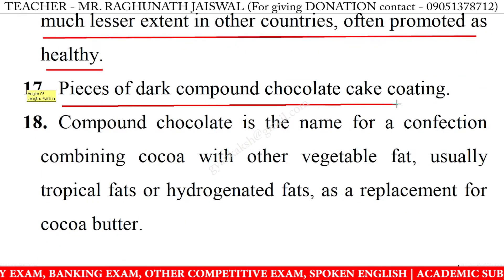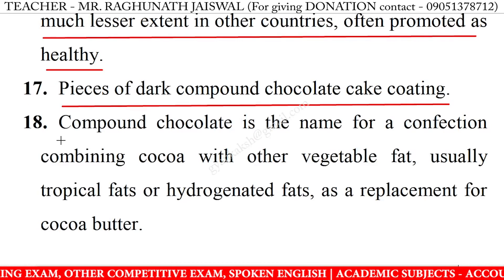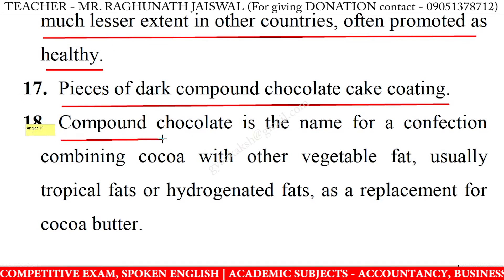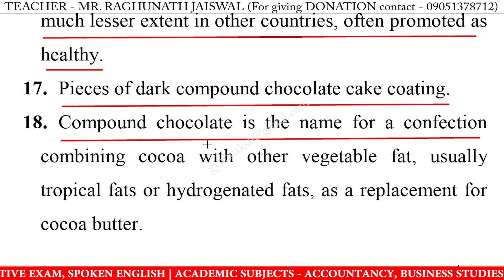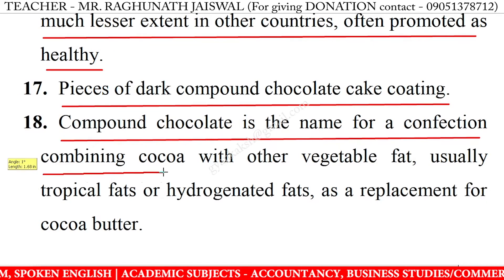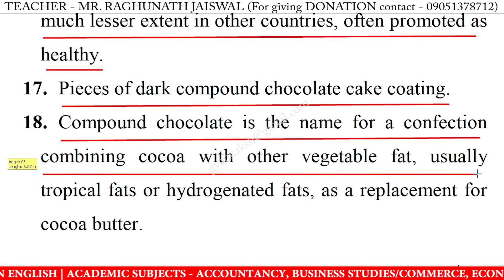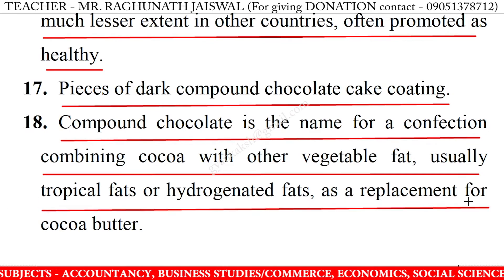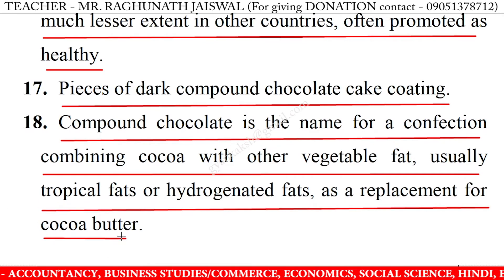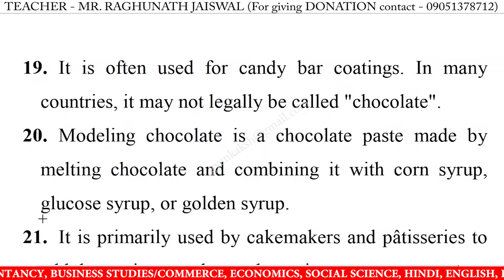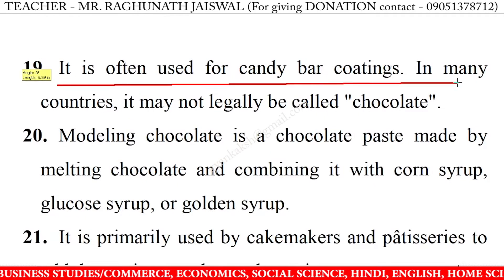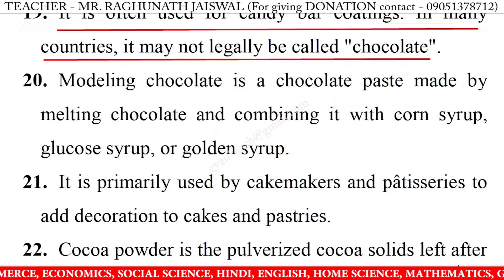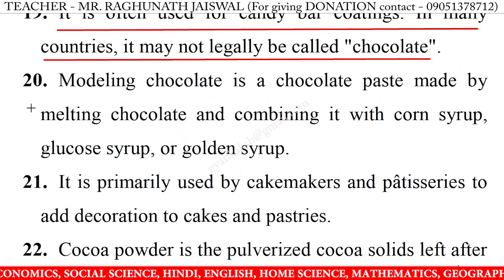Pieces of dark compound chocolate cake coating. Compound chocolate is the name for a confection combining cocoa with other vegetable fat, usually tropical fats or hydrogenated fats, as a replacement for cocoa butter. It is often used for candy bar coatings. In many countries it may not legally be called chocolate.